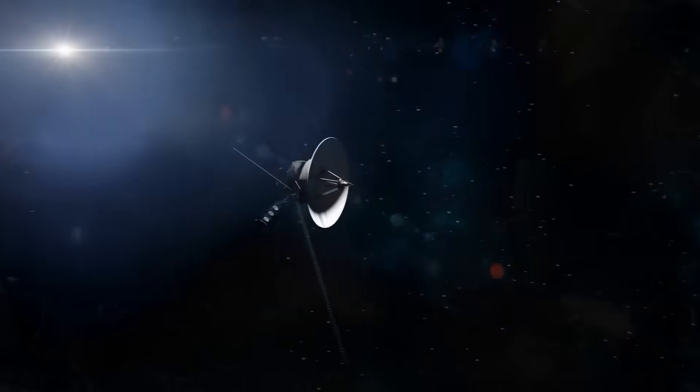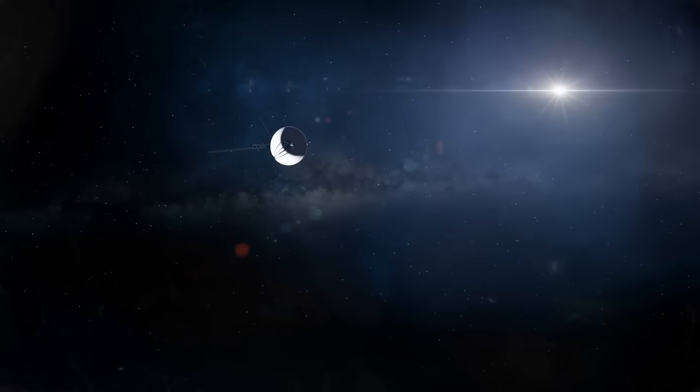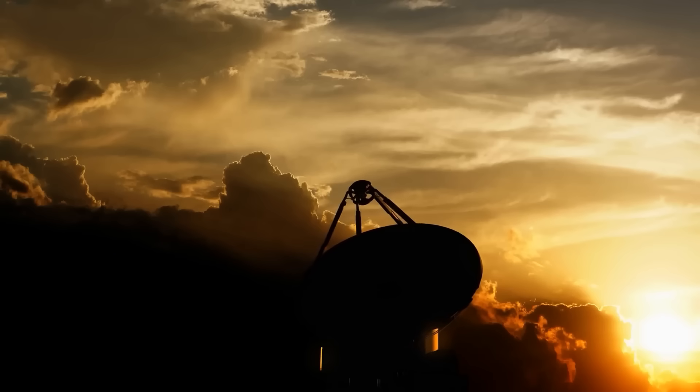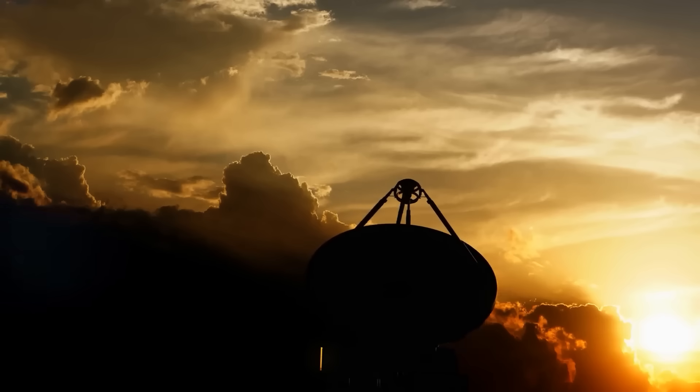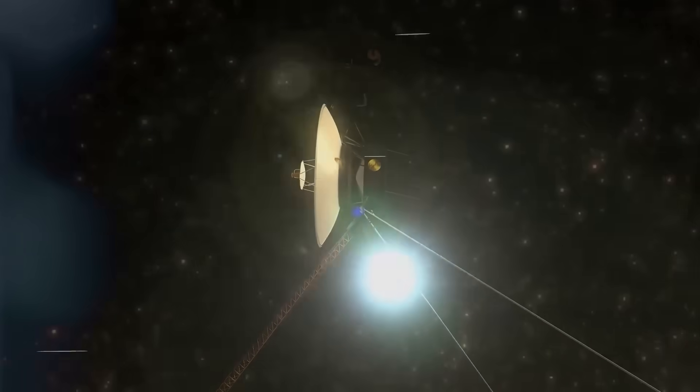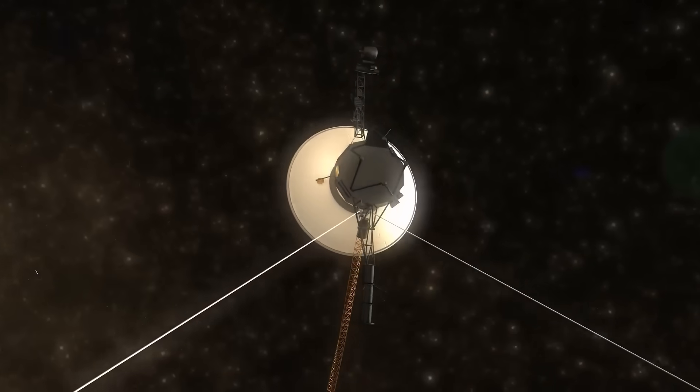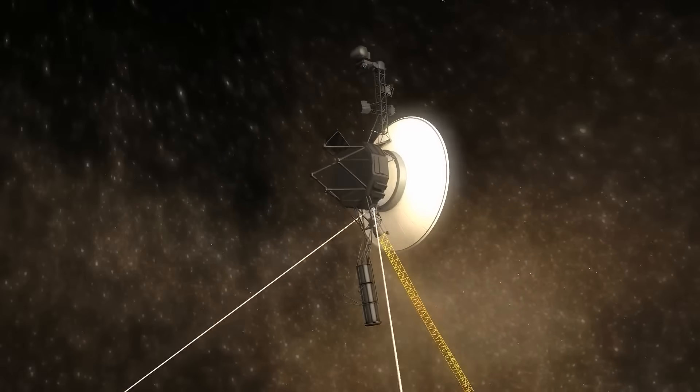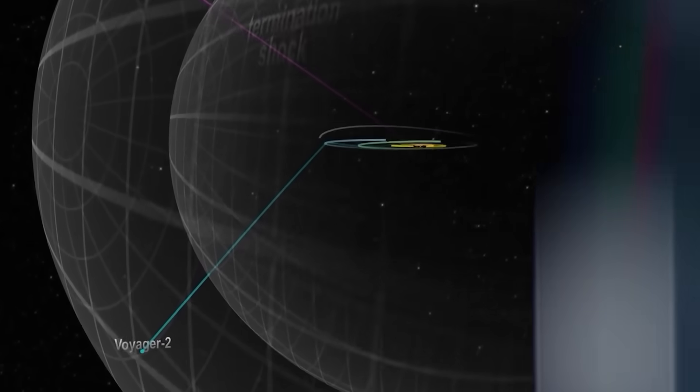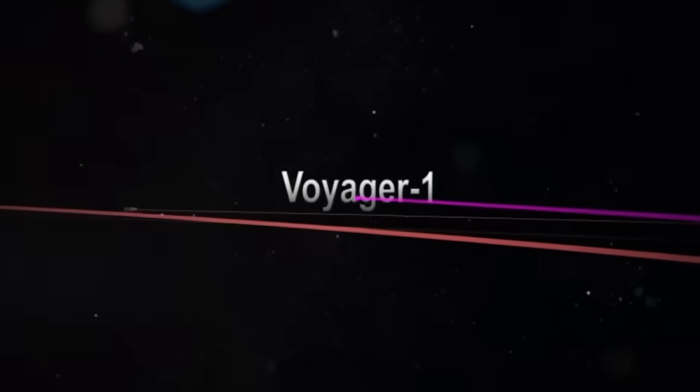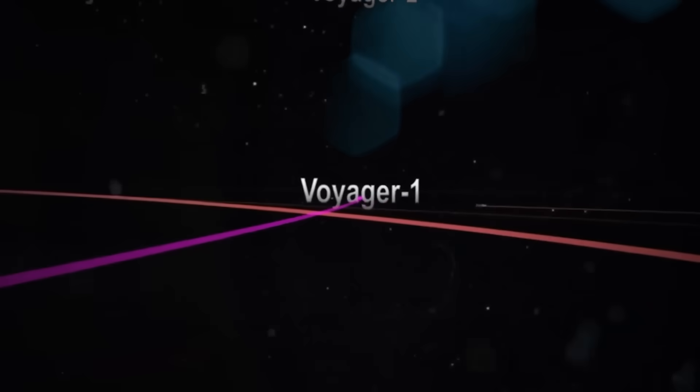Worse still, despite the stress, Voyager's systems began to operate more efficiently. This wasn't degeneration. This was optimization. Something was modifying how the 1970s machine processed energy, rerouting power like a modern AI. But Voyager doesn't have AI. It doesn't have autonomy. And yet, it was anticipating commands, reacting before instructions were sent. Either it had become something more, or something out there had taken the controls.